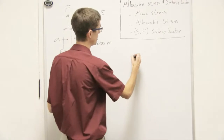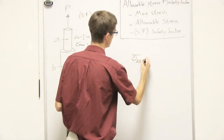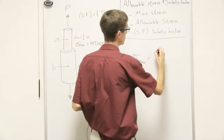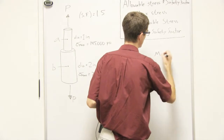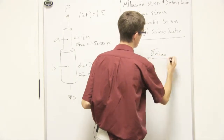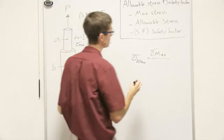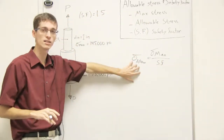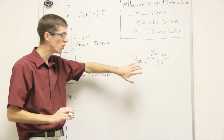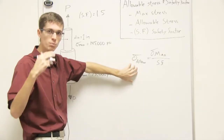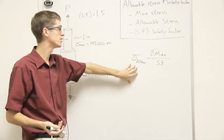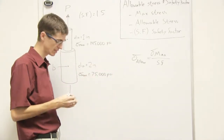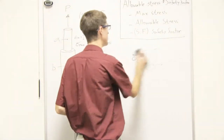We use allowable stress as the maximum we want our piece to experience. We use something called a safety factor to get that. The formula is: sigma_allow equals maximum stress divided by the safety factor. That gives us an allowable stress significantly less than maximum stress, so we aren't risking the piece yielding or breaking.